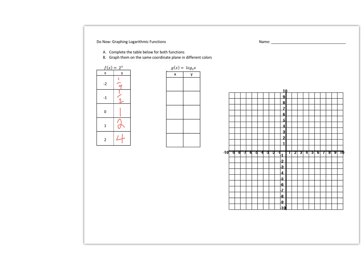Now let's look at the logarithmic side. One thing to keep in mind is that for logs, you're always solving for the exponent. I'll rewrite this log expression for a quick review: log base 2 of x equals y, and remember this y represents the exponent. We convert this to exponential form — base 2, exponent y, equals x. That's our logarithmic form.